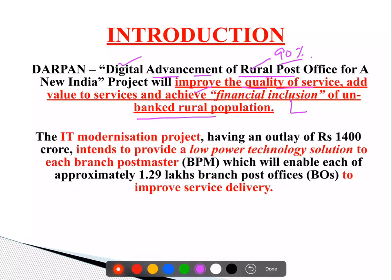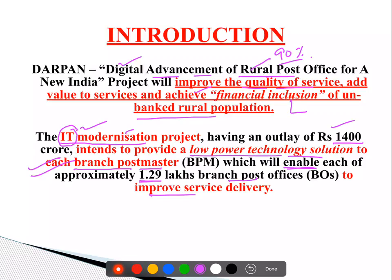तो देखते हैं — यह IT Modernization Project है, इसमें IT की modernization कर रहे हैं, and it has an outlay of ₹1,400 crores. जो बहुत सारी flagship schemes हैं, उनका outlay आप थोड़ा सा idea ले लीजिए. So it is an IT modernization project, और यह क्या कर रहे हैं — low power technology solutions would be provided to each branch post master, and that will enable each of the approximately 1.29 lakh branch post offices to improve their service delivery.